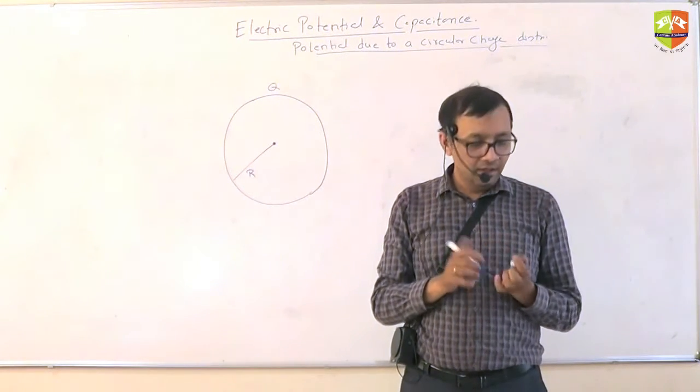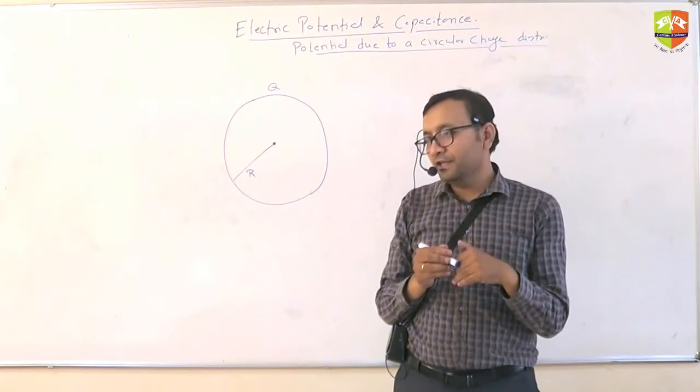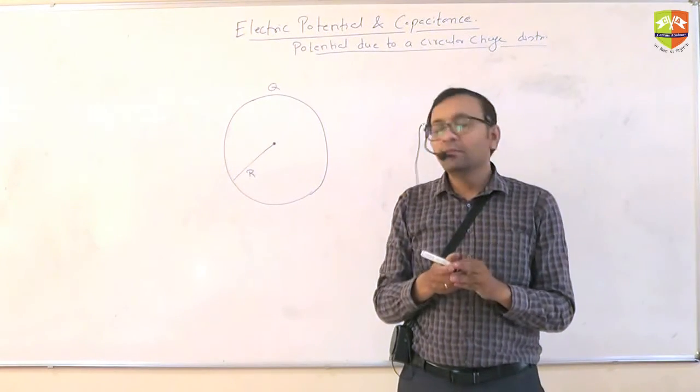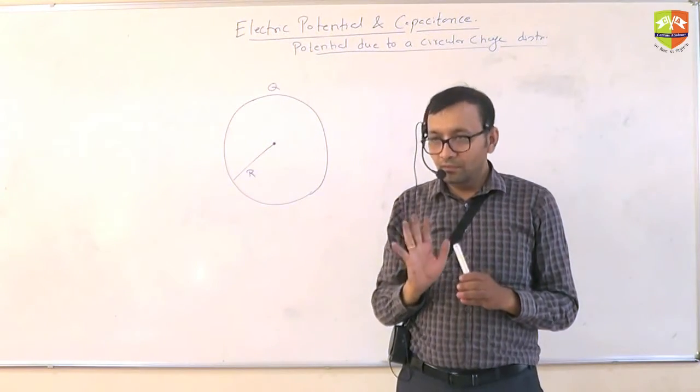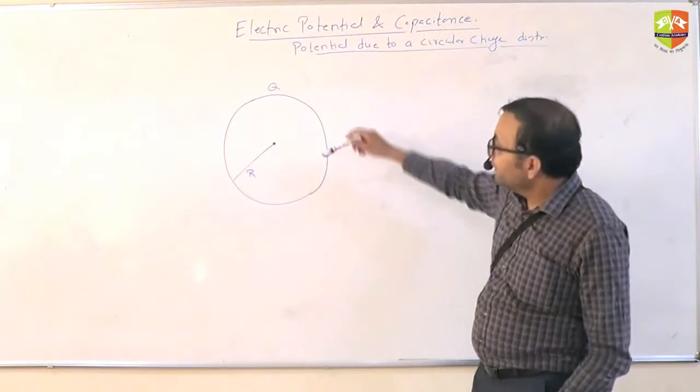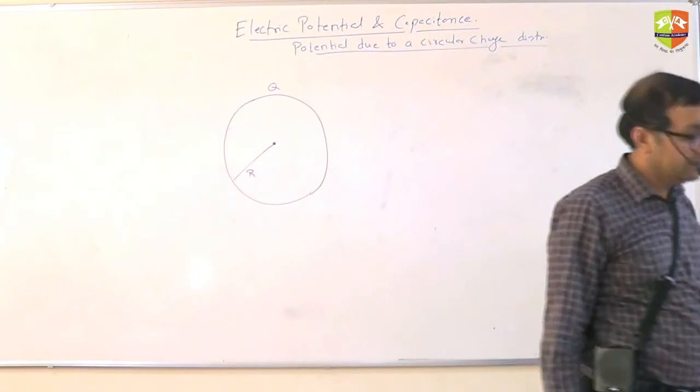It is scalar. It is a scalar. Because it is defined as potential energy per unit charge. It is a scalar. So you don't have to care about the direction. Okay? Now that's the hint. Finding potential at that point. At this point.